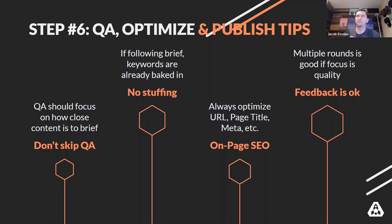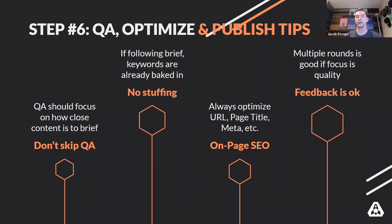On-page optimization: those things have to happen. You should optimize your URL, page titles, and meta description. No stuffing keywords — because if you've done the process right and if the author has followed that research, all of that should be baked in. So there really shouldn't be a need to do that.